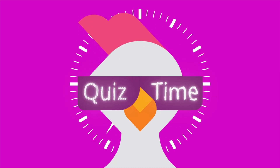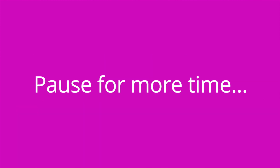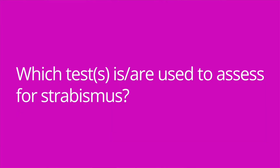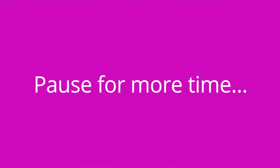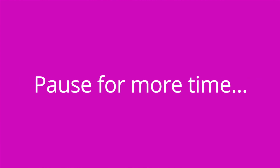That is it for assessment of cranial nerve number three. Here are some quiz questions to test your knowledge. What term is used to describe the involuntary rhythmic beating motion of the eyes? Nystagmus. Which test or tests are used to assess for strabismus? The cover test and corneal light reflex. Is cranial nerve three sensory, motor, or both? Motor.